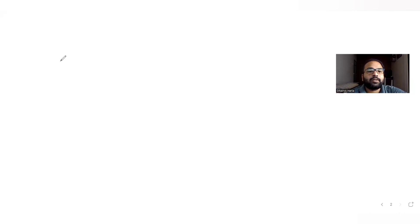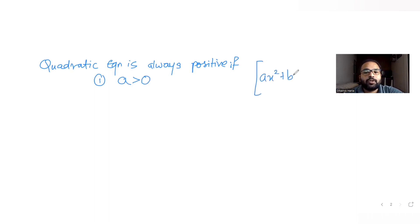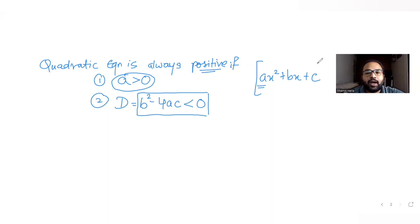Let's discuss the concept of this question. The quadratic equation ax² + bx + c is always positive when two conditions are satisfied: first, the coefficient of x² must be positive; second, the discriminant, b² − 4ac, must always be negative. If both conditions hold, the quadratic equation is always positive.